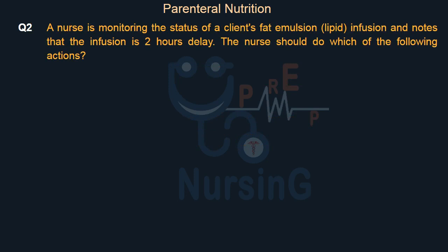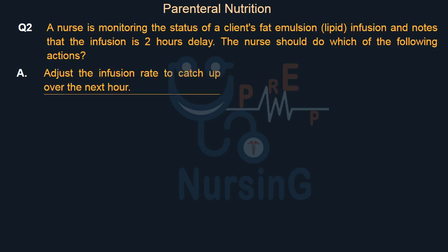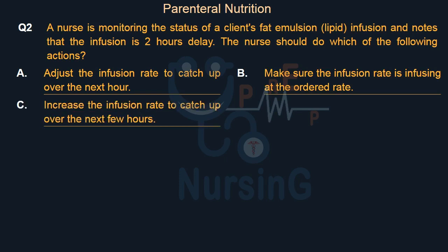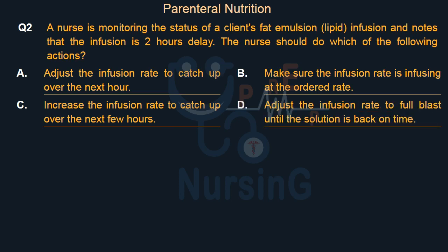A nurse is monitoring the status of a client's fat emulsion (lipid) infusion and notes that the infusion is two hours delayed. The nurse should do which of the following actions? Option A: Adjust the infusion rate to catch up over the next hour. Option B: Make sure the infusion rate is infusing at the ordered rate. Option C: Increase the infusion rate to catch up over the next few hours. Option D: Adjust the infusion rate to full blast until the solution is back on time.